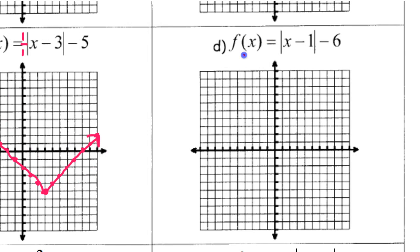Similarly, function d here is going to be right 1, down 6. So there's my vertex. There's no number here, so it'll still be up 1 right 1. So here's the graph for this function.